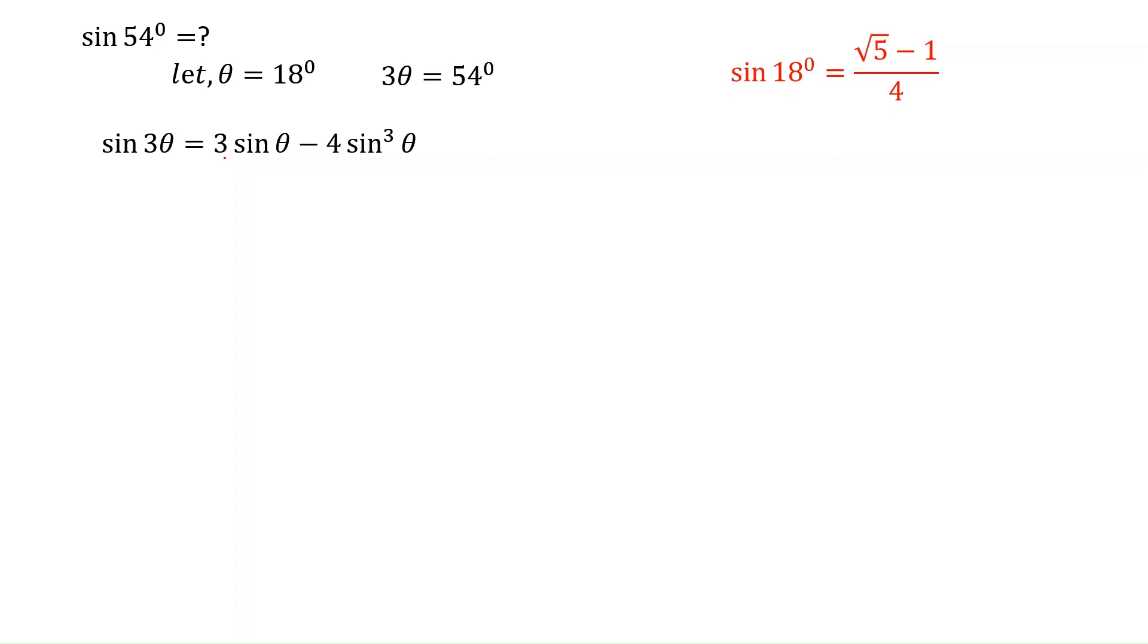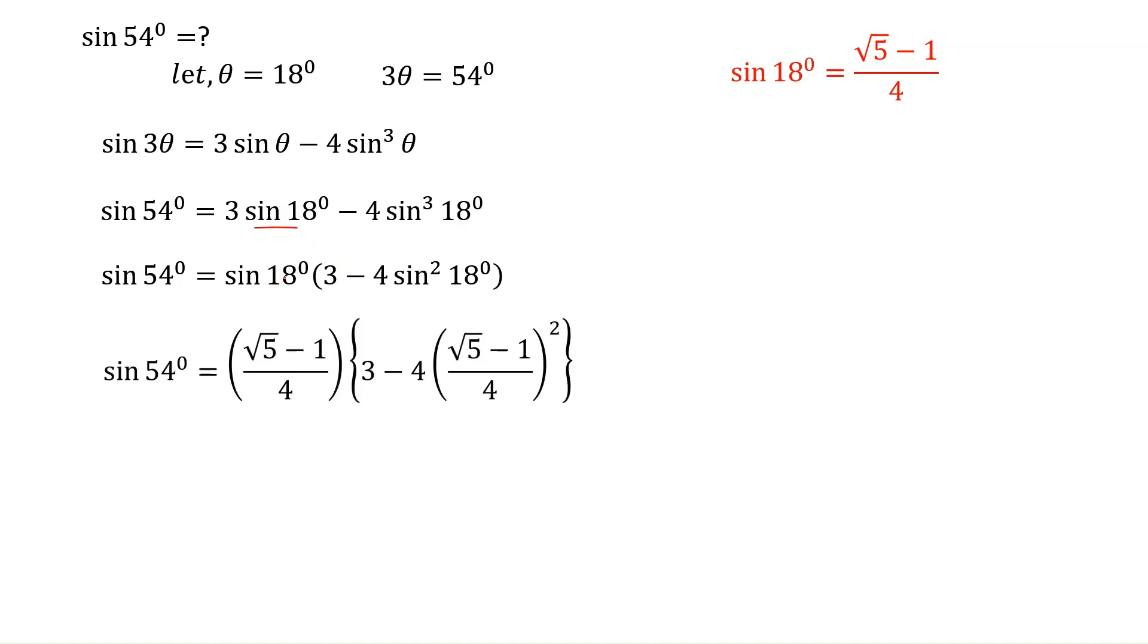Sin 3 theta equal to 3 sin theta minus 4 sin cubed theta. We will use this. Now substitute here 3 theta and theta. In place of 3 theta, we will keep 54 and in place of theta, 18. Now the substitution will be like that. After this, we will take sin 18 common from this. That makes sin 18 of 3 minus 4 sin squared 18. Now substitute the value of sin 18 in this equation.